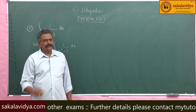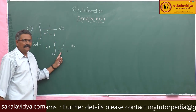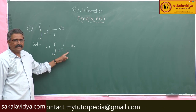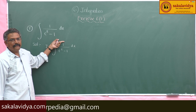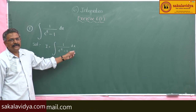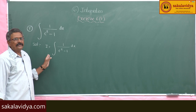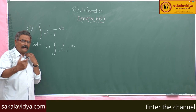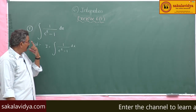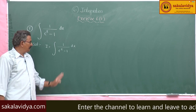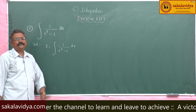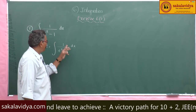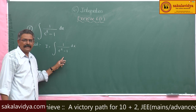This problem can be done in two ways. One way is to replace eˣ by 1 by e^(−x), giving e^(−x) by (1 minus e^(−x)), which is of the form f'(x)/f(x), yielding log|1 minus e^(−x)| — that problem we have already done. But using partial fractions we can also do it. To apply partial fractions, we multiply both numerator and denominator by eˣ.